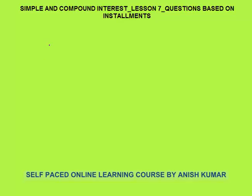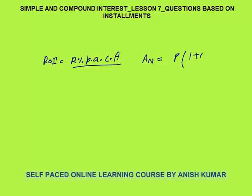Whenever the rate of interest is R% per annum compounded annually (CA stands for compounded annually), the amount after N years is equal to P into (1 + R/100)^N, where R is the rate of interest, P is the principal, and A_N is the amount.